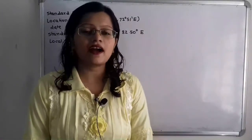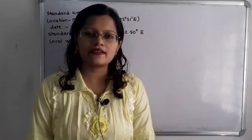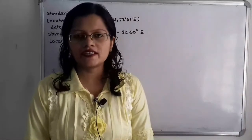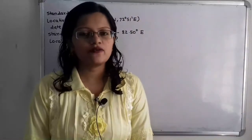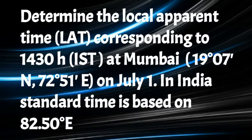Hello friends, this is Priyanka. Today we are going to solve a problem on local apparent time for the solar radiation geometry. The problem is: Determine the local apparent time (LAT) corresponding to 14:30 hour IST at Mumbai, 19 degree 7 minute north and 72 degree 51 minute east, on July 1. In India, standard time is based on 82.50 degree east.